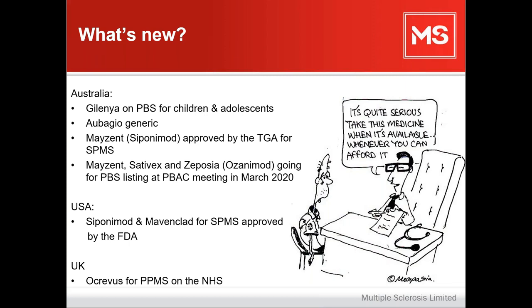Three drugs are going forward for listing on the PBS: Mayzent (siponimod), Sativex — a medicinal cannabis used for spasticity unresponsive to other treatments — and Zeposia (ozanimod) for relapsing remitting MS. These are being reviewed by the PBAC — the Pharmaceutical Benefits Advisory Committee — an independent panel of experts and community members who decide whether a drug should be on the PBS. They were meeting in March 2020 to review those submissions.